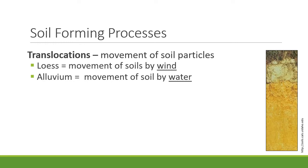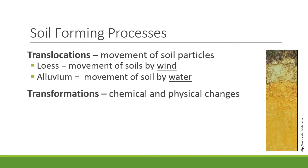Those are two ways that we get soil movement from one site to another. Another thing that can happen is transformation of parent material in place — the rocks on a site can be turned into soil through chemical and physical processes. It could be chemical changes like shifts in acidity, or physical changes like freezing and thawing. That's transformation of bedrock into soil.